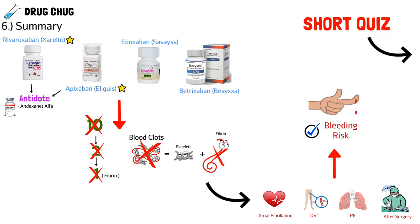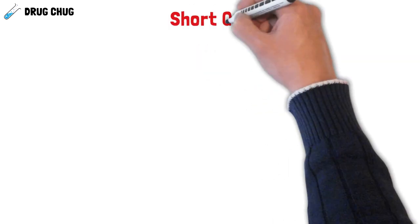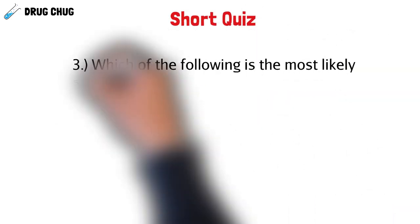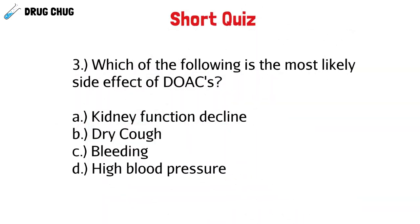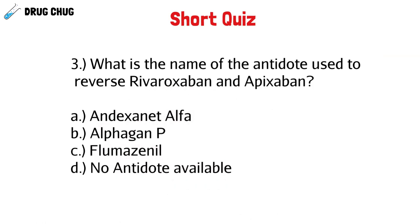Quiz time: Question one — which of the following Factor Xa inhibitors have an antidote? Question two — which clotting factor does rivaroxaban block? Question three — which of the following is most likely a side effect from DOACs? Question four — what is the name of the antidote used to reverse rivaroxaban and apixaban?